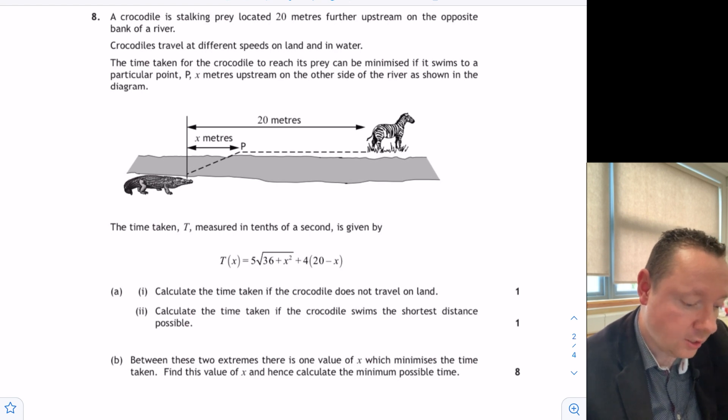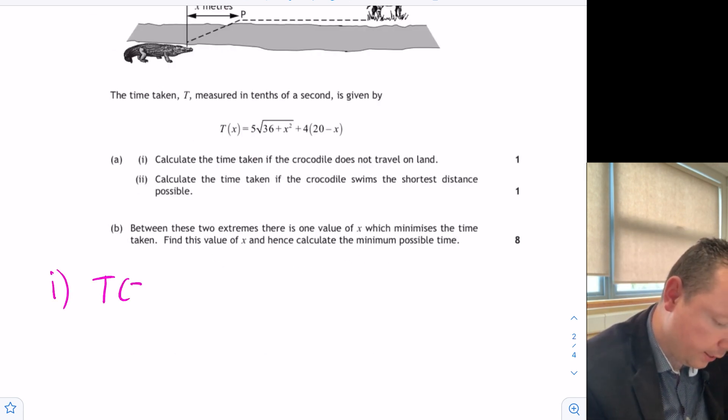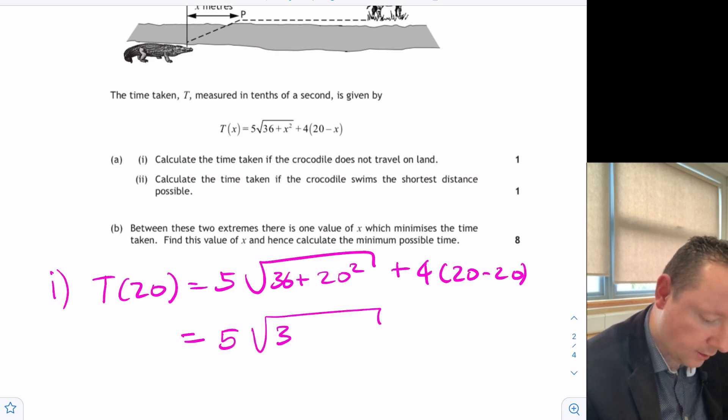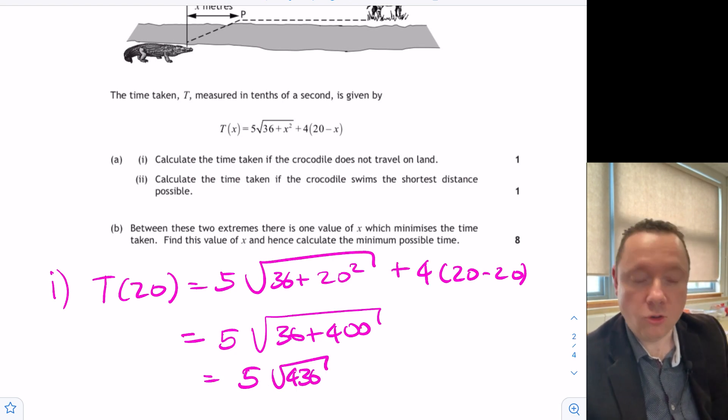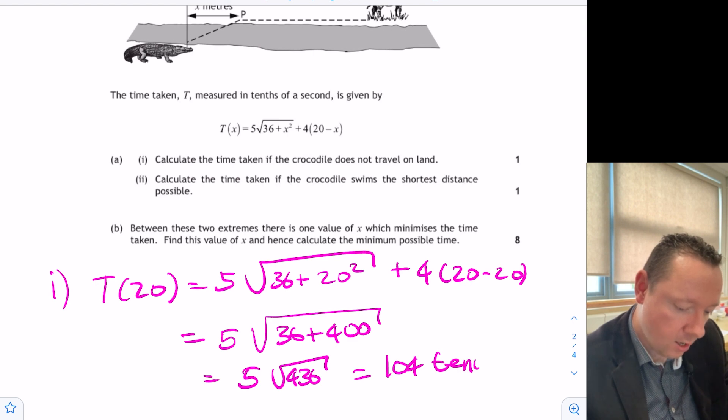Well it's asking me basically this, if it doesn't travel on land it is in the water. If it's in the water it's just swimming straight upstream at 20 meters. So part one actually is just substituting x equals 20 into this formula. So part one t of 20 is 5 root 36 plus 20 squared plus 4 times 20 minus 20. Well that's zero so that's just 5 plus the square root of 36 plus 400 and that equals 5 times the square root of 436 and that is 104. And once you get your calculator out you do square root of 436 times it by 5 and you get 104 and just remember your units it's tenths of a second. So that's part one done.